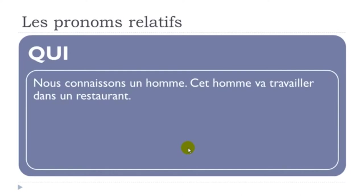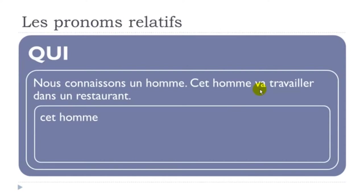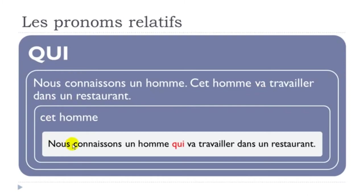A third example with futur proche: 'Nous connaissons un homme' + 'Cet homme va travailler dans un restaurant.' We don't want to repeat 'cet homme', so: 'Nous connaissons un homme qui va travailler dans un restaurant.' Just before the verb, same rule applies.